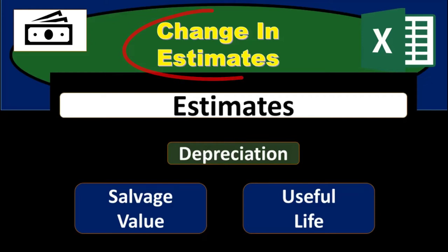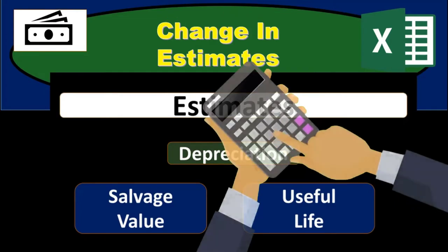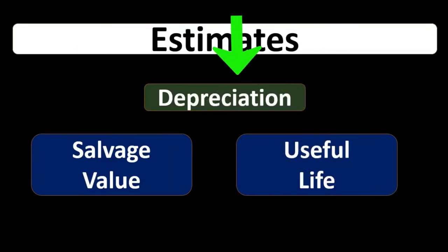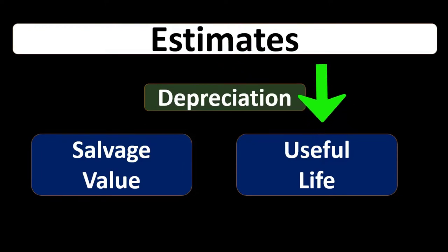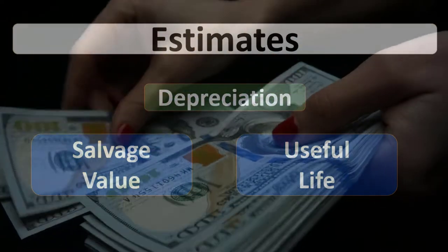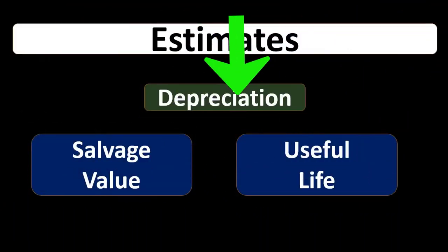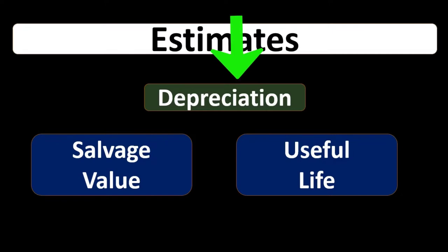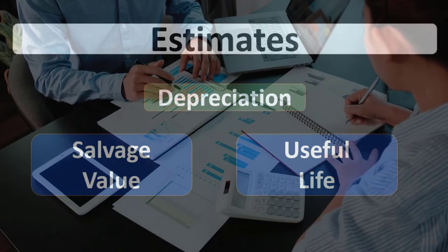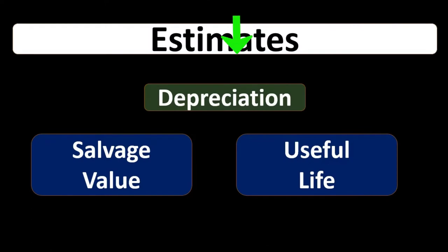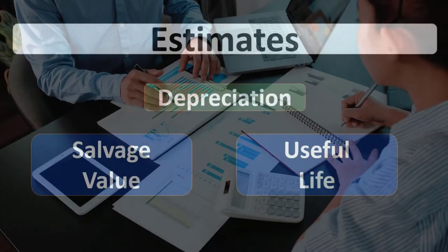In this presentation we will discuss change in estimates related to the calculation of depreciation. Depreciation is the allocation of the cost of property, plant, and equipment over the useful life. When we purchase equipment, even if we paid cash for it, we put it on the books as an asset rather than expensing it at the time of purchase, then allocate the cost over the life of that asset in accordance with the matching principle, trying to match the expense with the period in which it helps generate revenue. As we consume the property, plant, and equipment, we write off the expense when it has been consumed to help generate revenue, giving us the best matching and comparability.